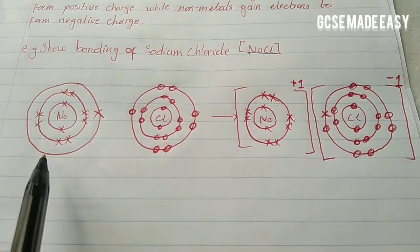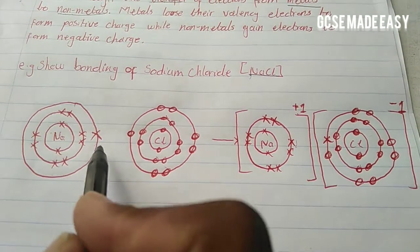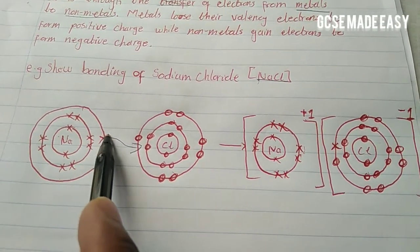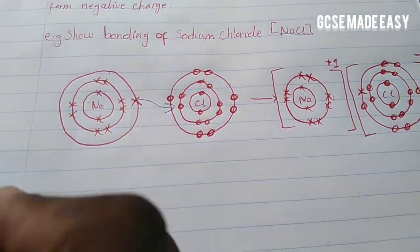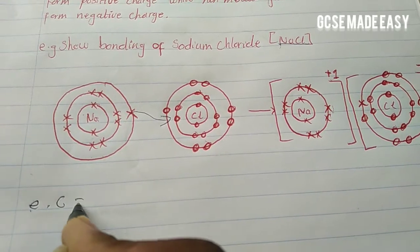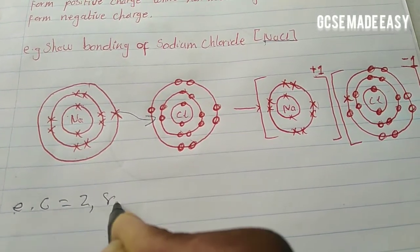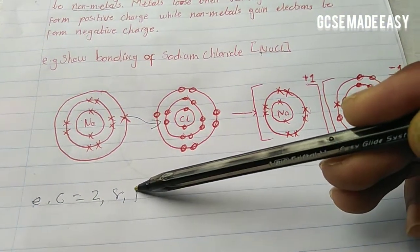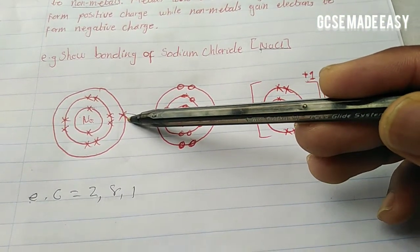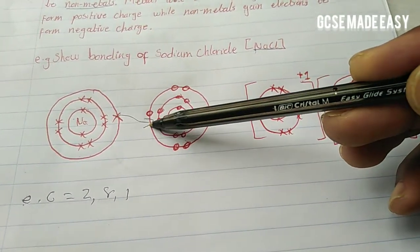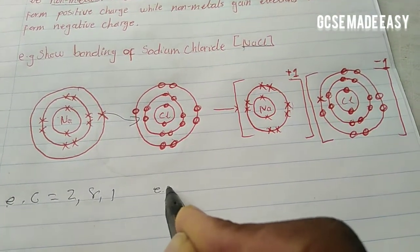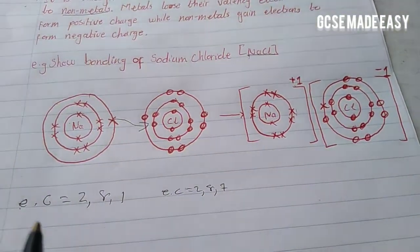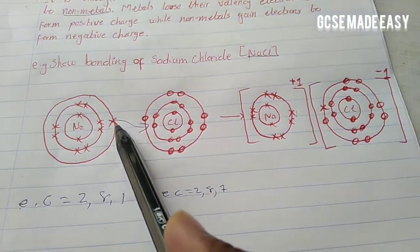Under ionic bonding, sodium will lose its valency electron. We show the movement of electrons by an arrow. The electronic configuration of sodium is 2, 8, 1 — meaning sodium has one valency electron in its last shell. It will lose that valency electron to chlorine, which has the electronic configuration 2, 8, 7.